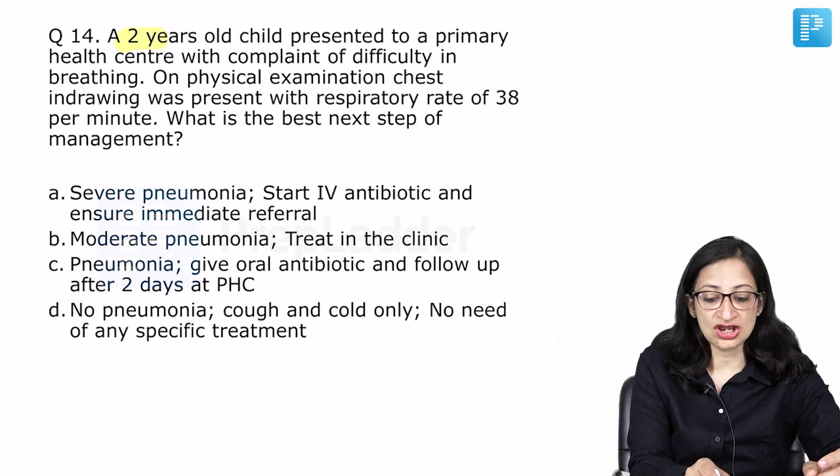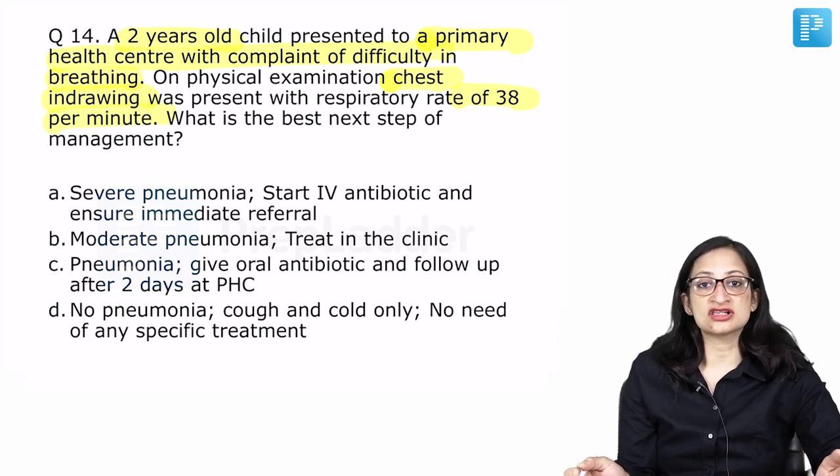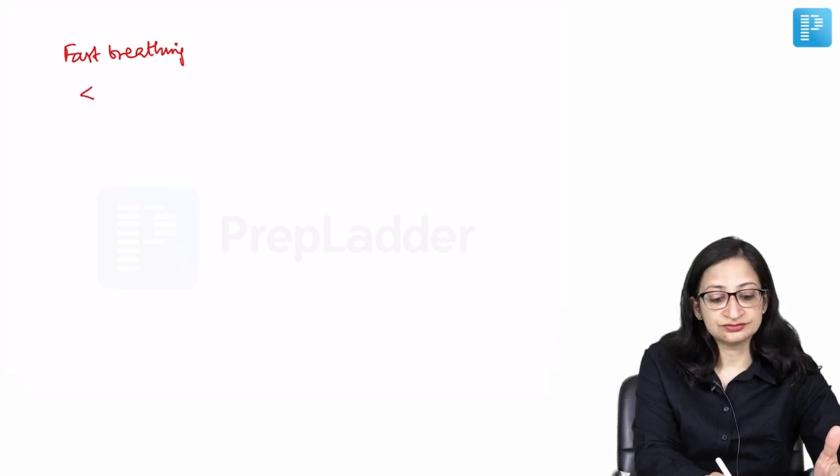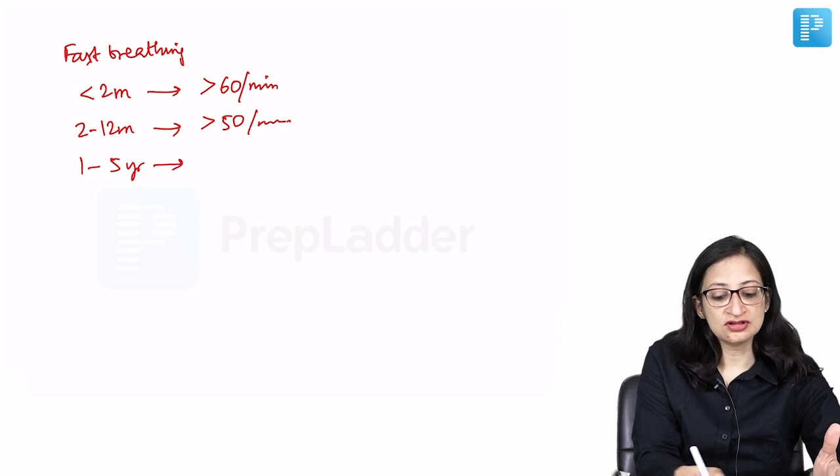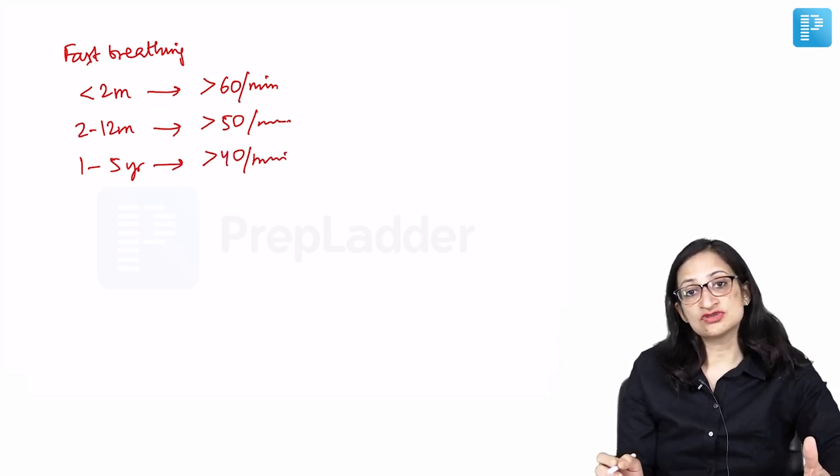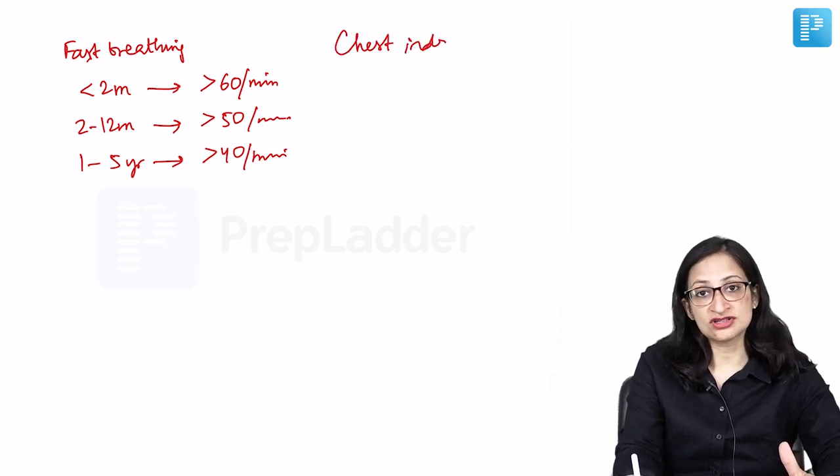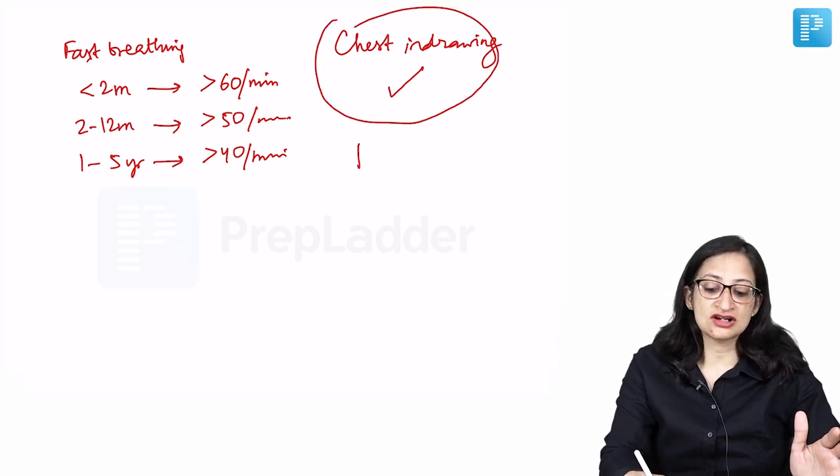Moving ahead to the next question, what we have here is a 2 year old child who presented to the primary health center with complaint of difficulty in breathing. On physical examination, chest indrawing was present and respiratory rate of 38 per minute. What is the next best step? First, we need to classify this child and then we will think about management. We need to see whether fast breathing is there or not and chest indrawing is there or not. What do you mean by fast breathing? We need to know the definition of fast breathing. In a child less than 2 months age, we call it fast breathing if the respiratory rate is greater than 60 per minute. 2 to 12 months of age, we call it fast breathing if the respiratory rate is more than 50 per minute. And 1 to 5 years, we call it fast breathing if the respiratory rate is more than 40 per minute. In the given question, how much was the respiratory rate? It was 38. So, it is not fast breathing. But remember chest indrawing is present here. In the question, it is mentioned that the child does have chest indrawing.